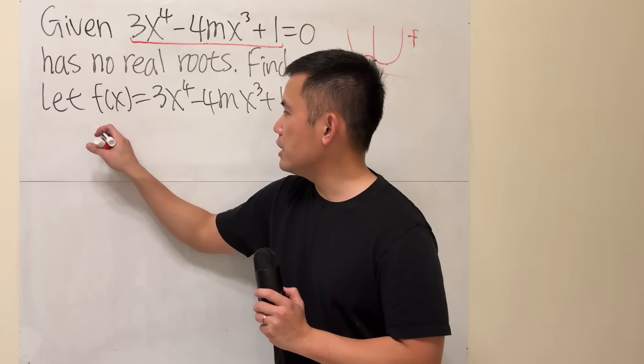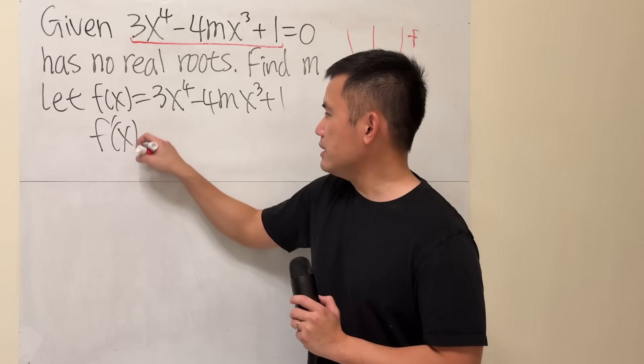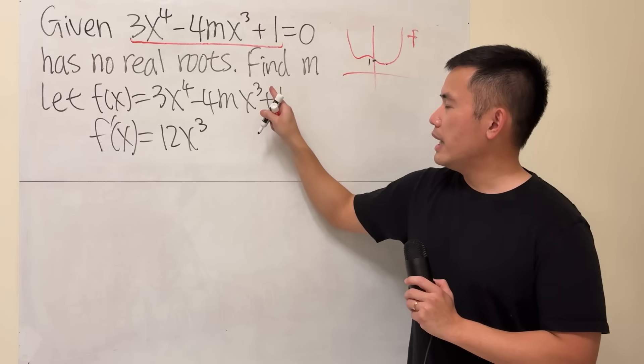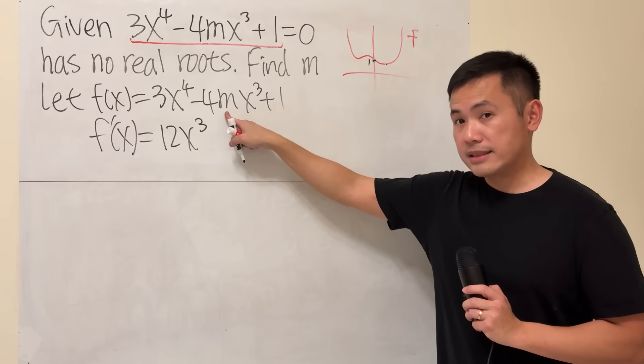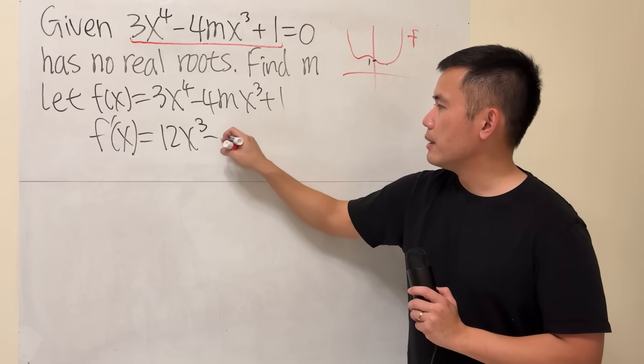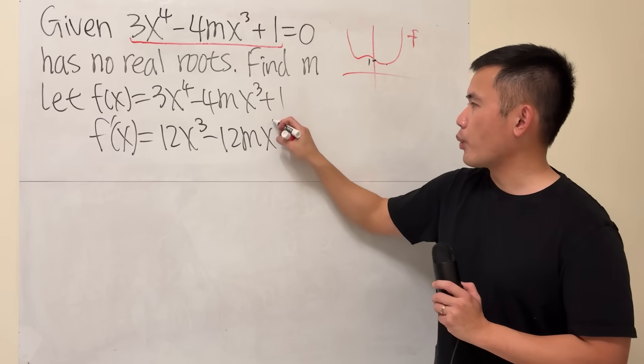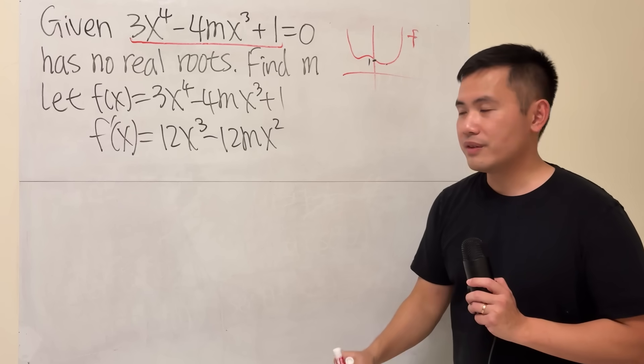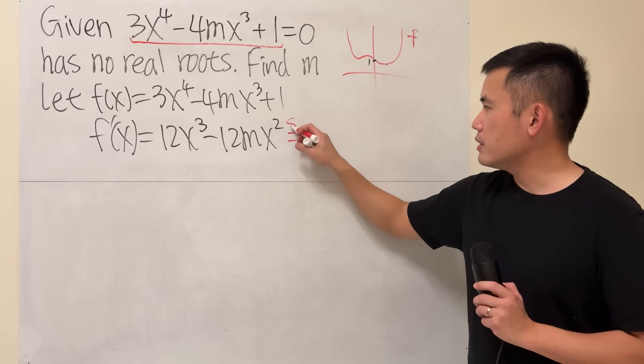Let's go ahead and find the derivative. f'(x), the derivative of that is 12x to the third power, and right here, remember it is a constant. Differentiate this, put the 3 to the front: minus 12mx squared. Plus 1 doesn't matter.